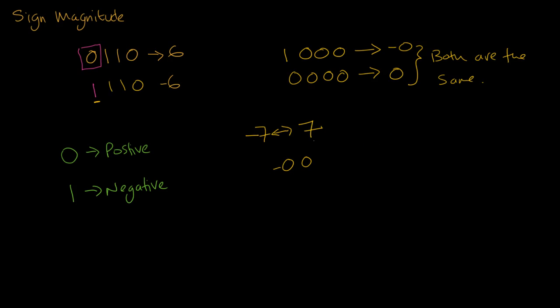So sign magnitude, all you're doing is you are using the first bit, the most significant bit, to represent whether it's a positive number with a 0 or a negative number with a 1. So let's take a look at another version of negative numbers using binary.